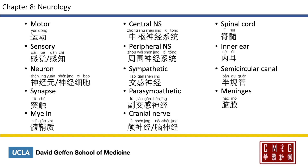Sensory is either 感觉 or 感知. 感觉 can also mean emotions in some cases. Neuron is 神经元 or 神经细胞. Synapse is 突触. Myelin is 髓鞘. Central nervous system is 中枢神经系统, and the peripheral nervous system is 周围神经系统. Sympathetic nervous system is 交感神经, and the parasympathetic is 副交感神经.